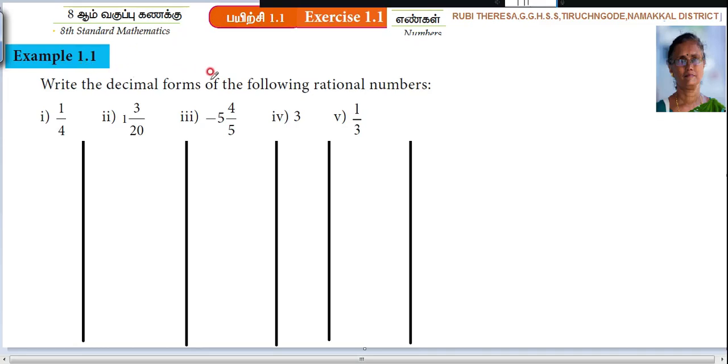Write the decimal form of the following rational numbers. This is in P by Q form. You have to write the number in decimal form. Decimal form means there should be a point in a number.